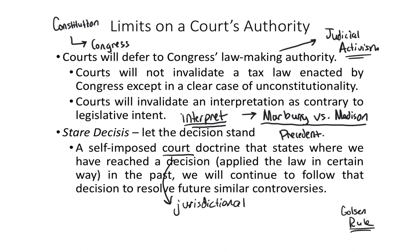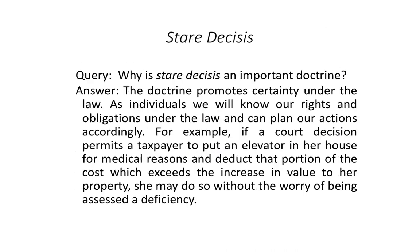Why is stare decisis so important for the U.S. economy and our structure of government? It's all about predictability. If we can look at opinions over time and know a decision has not been overruled or overturned, we can understand that the legal system is going to apply similar application. There's no open area about making a transaction work. It's a cornerstone of the U.S. government and economy. Under the law, as individuals, we know our rights and obligations and can plan our actions accordingly.